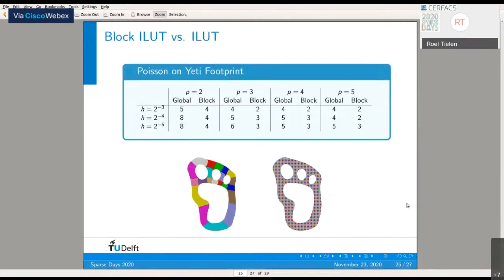To compare both smoothers, we consider the Poisson equation on a Yeti footprint. This geometry consists of 21 different patches to construct this footprint. Comparing iteration numbers of global ILU(T) with block ILU(T), the block ILU(T) smoother on the high-order level leads to lower iteration numbers. Both show more or less H-independent and P-independent convergence.